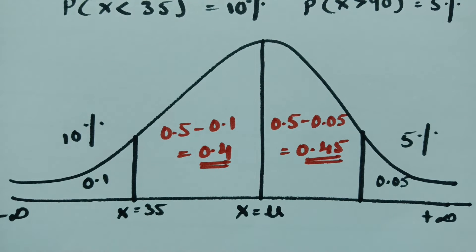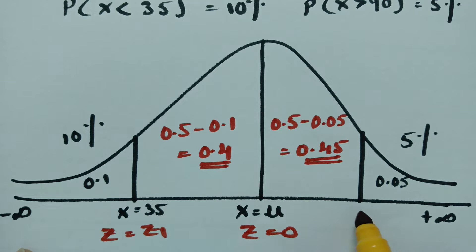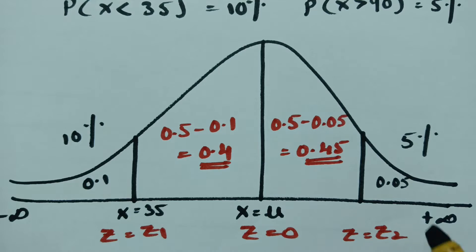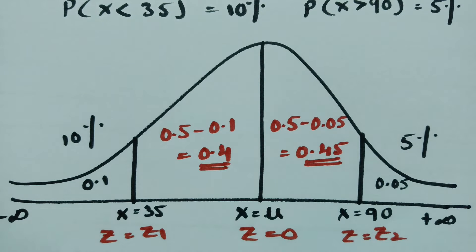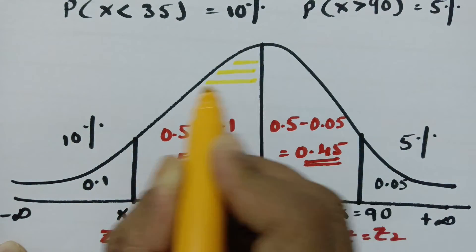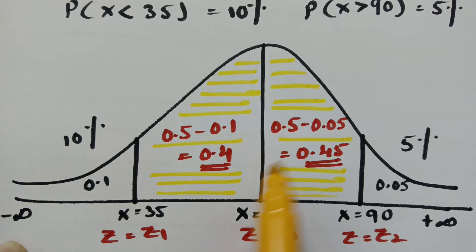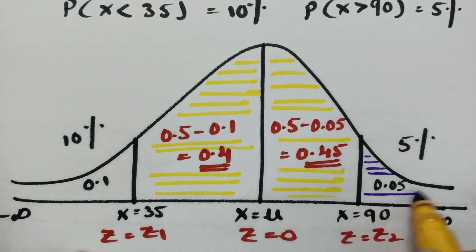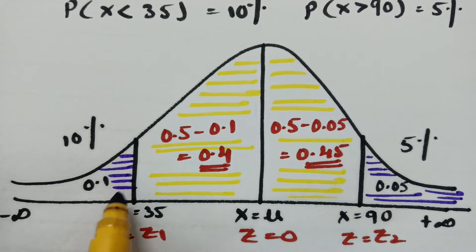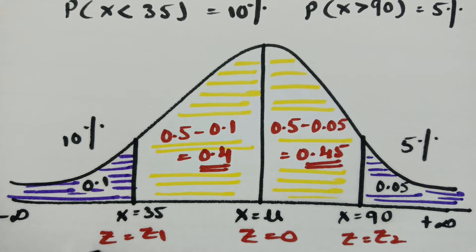When we compare with z, z equals 0 at the center. The value at x=35 corresponds to z equals z1 on the left, and x=90 corresponds to z equals z2 on the right. Above 90 is 5%, so x equals 90 is placed on the right. This is z equals 0, z equals z1, and z equals z2 marked on the normal curve.